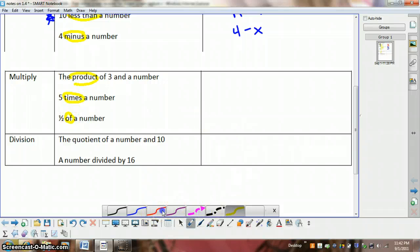So let's take a look at these problems. The product of 3 and a number, we'd have 3n. And remember when the number is written directly beside the variable, that means multiply. 5 times a number, we'd have 5x. And half of a number. We take a number and we multiply it by half. So we'd have one-half n.